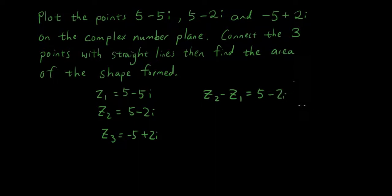minus z1, that's 5-5i, so that's 5 minus 5, minus 2i plus 5i, so the answer is 3i.